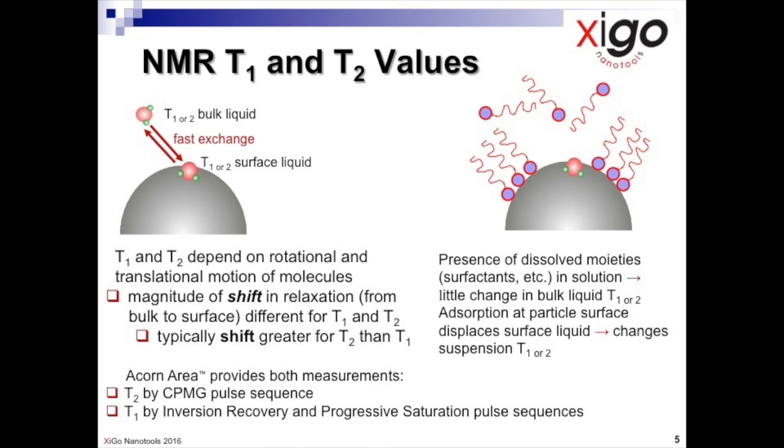Either T1 or T2 relaxation can be used and the Xigo Acorn Area device provides both measurements. T2 is determined using what is termed a CPMG pulse sequence, while T1 is determined using either an inversion recovery or a progressive saturation pulse sequence.